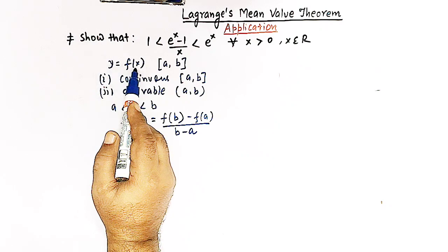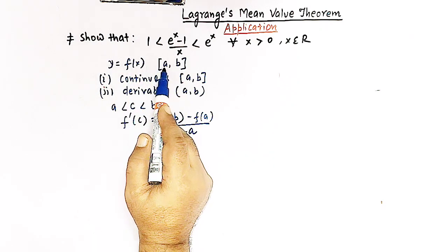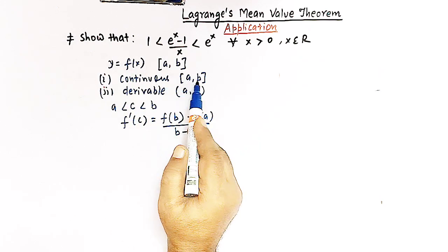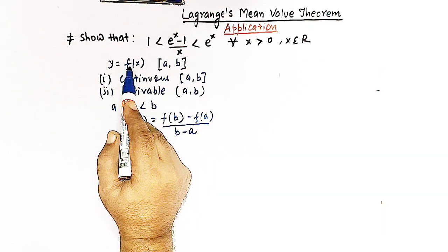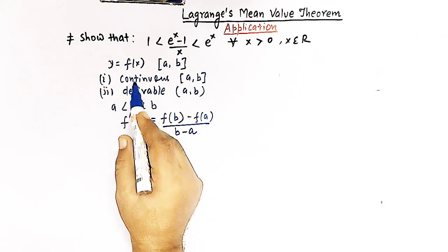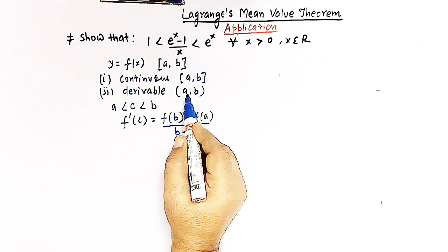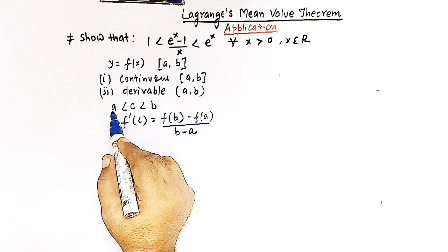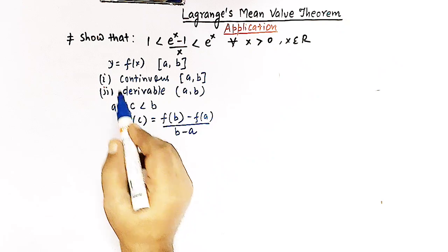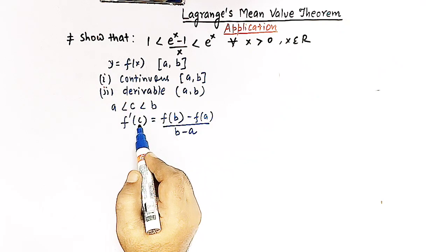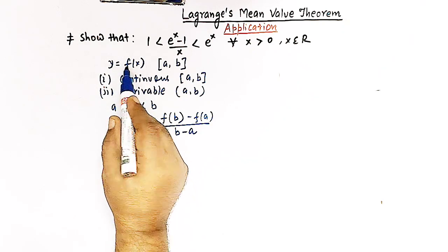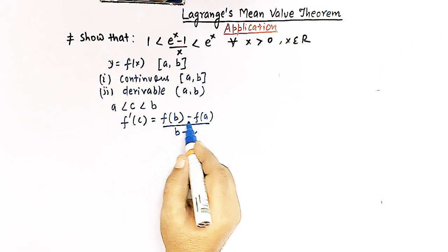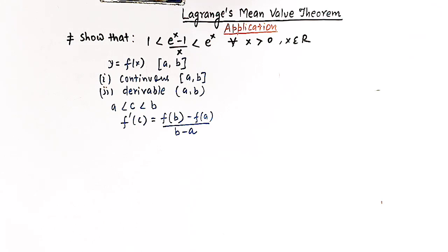So to summarize the statement: we have a function y = f(x) defined in the domain [a, b], this function f(x) is continuous in the closed interval [a, b] and has a finite derivative in the open interval (a, b). Then there must exist a point c between a and b such that f'(c) equals f(b) minus f(a) divided by b minus a.